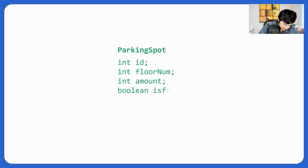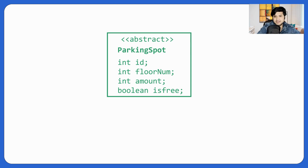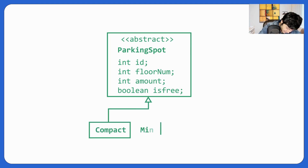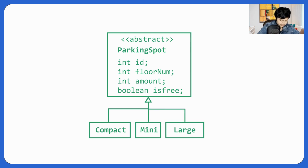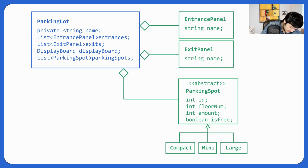We'll make ParkingSpot abstract and extend it for Compact, Mini, and Large — great, we have those here. And again, my parking lot is composed of parking spots because parking spots have no existence without the parking lot. We're done with ParkingSpot.